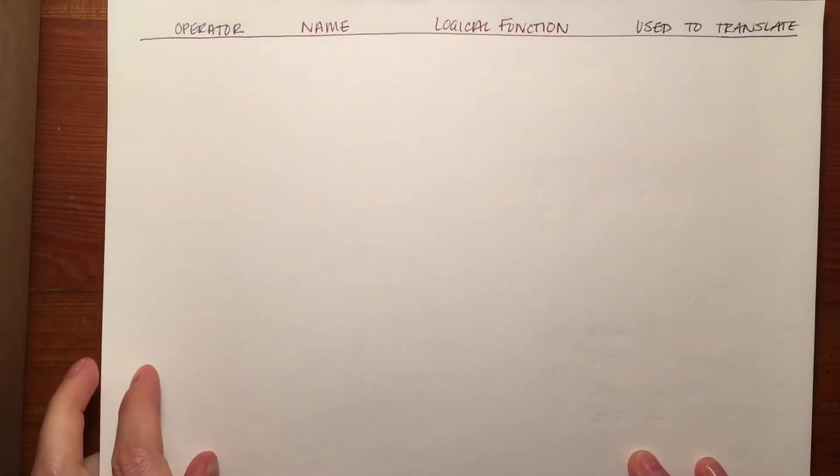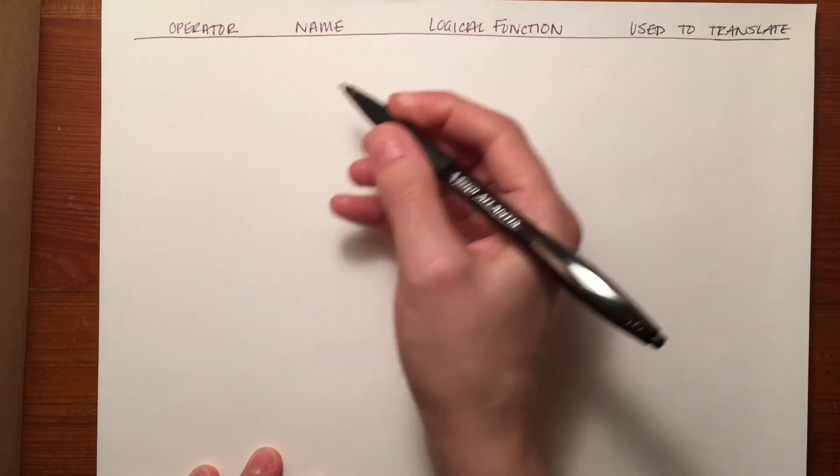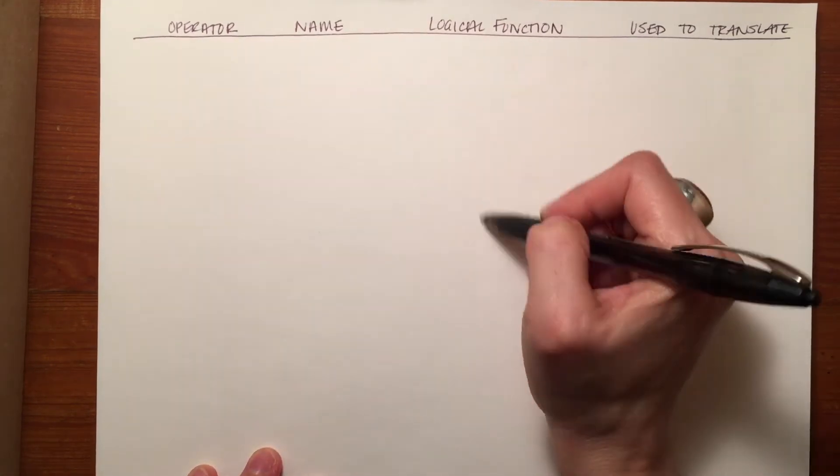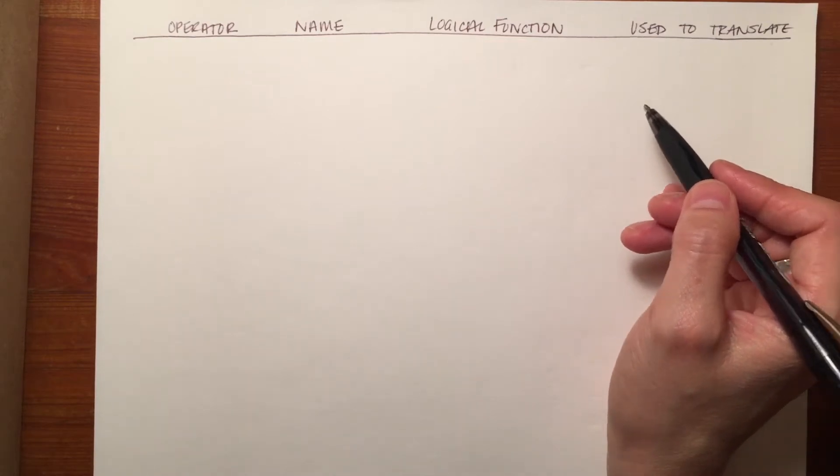Now I'm going to tell you about each one of the logical operators. There are five of them. I'm going to give you their symbol, their name, their logical function, and a shorthand list of what they're used to translate.